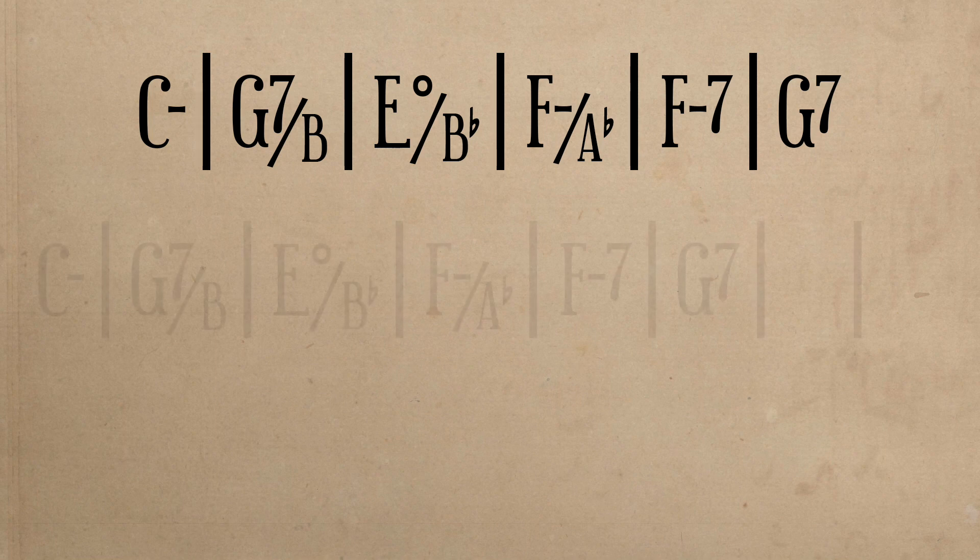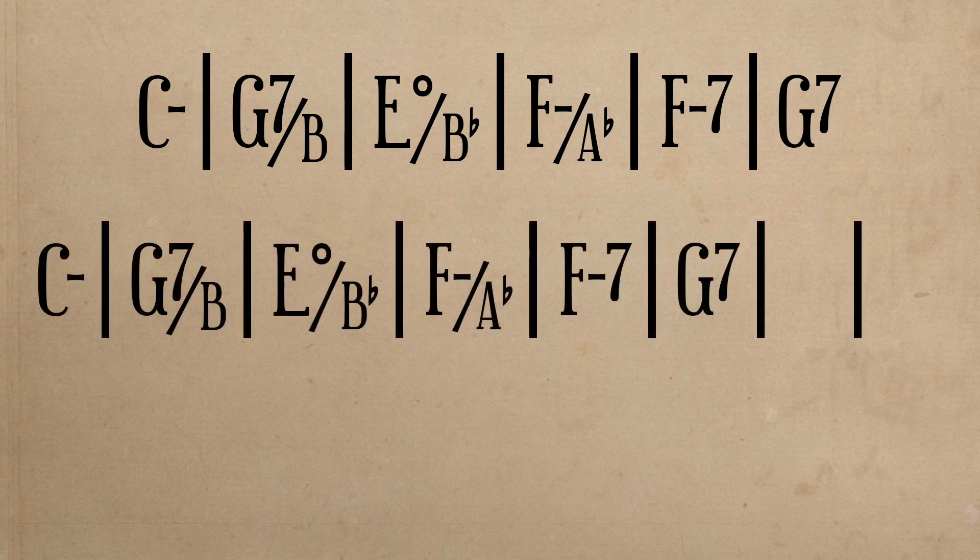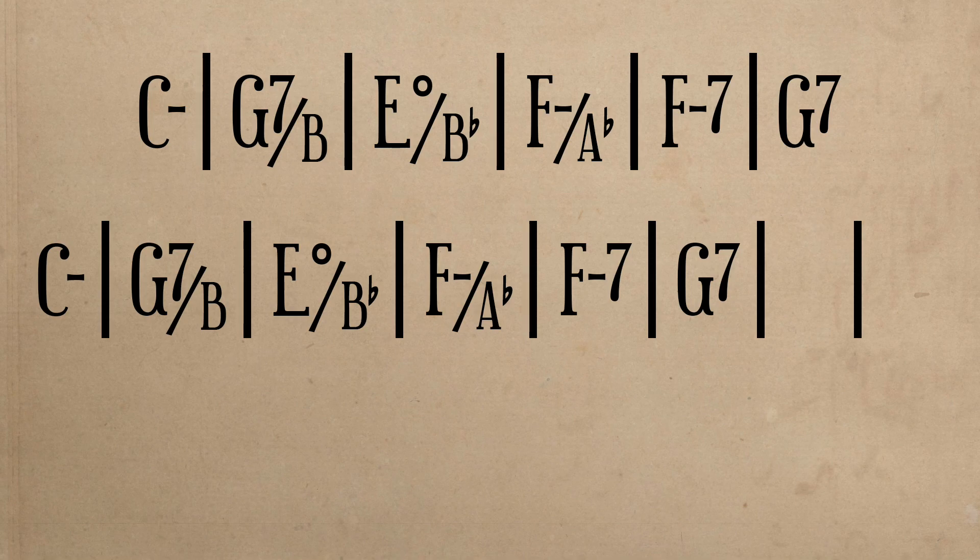This progression is then repeated, only now we hear it with the addition of two measures at the end. These measures consist of F minor, the 4, and G7, the 5-7, and they are used to prolong or extend the preceding half cadence.